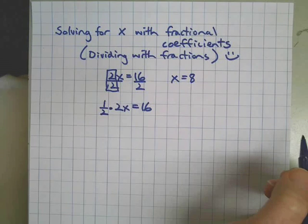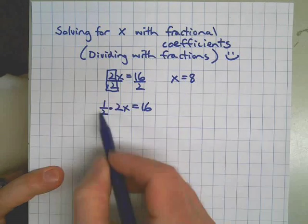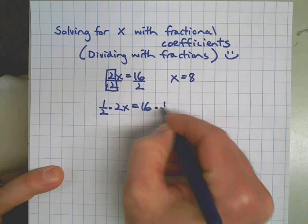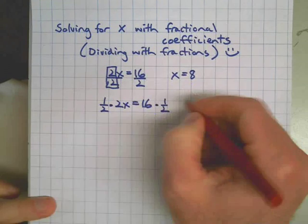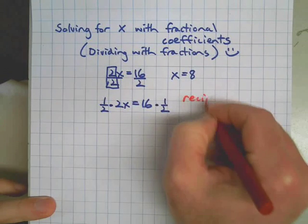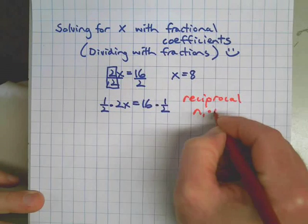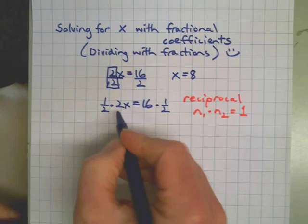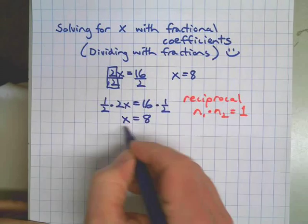The reciprocal of the coefficient is a number which, when you multiply them together, equals 1. So 1 half times 2 is 1, right? If we multiply both sides by that reciprocal — that's two numbers multiplied together that equal 1 — when we multiply both sides by the reciprocal of the coefficient, we still get x equals 8.